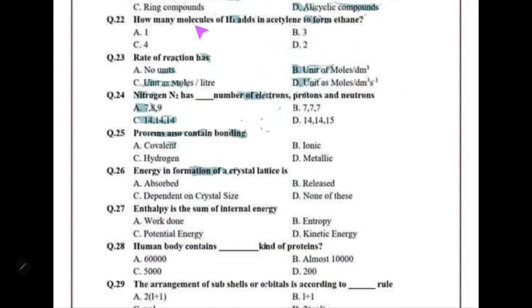How many molecules of hydrogen are added to acetylene to form ethane? In acetylene, if we break one pi bond, two hydrogen atoms are added; breaking the second pi bond adds two more hydrogen atoms. So four hydrogen atoms are added to form ethane. This is choice C.